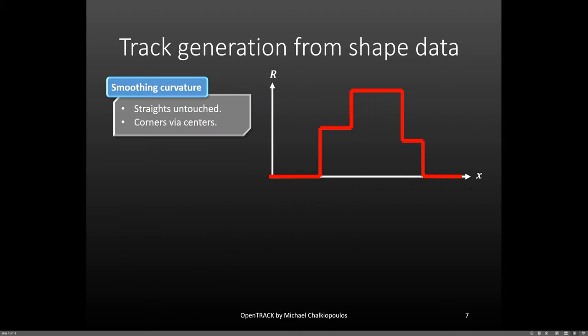To simulate a smooth transition between different segments with different corner radiuses and not get weird and unrealistic results, the inputs have to be processed. If you think about the shape input you provide OpenTrack with, it looks something like this on the right with a turning radius being constant in each segment. So what OpenTrack does is leave straights untouched and take into account the center point of each turn segment.